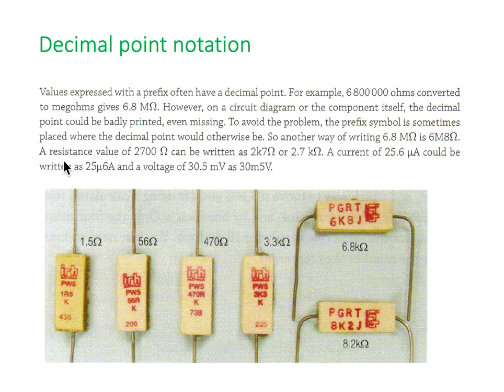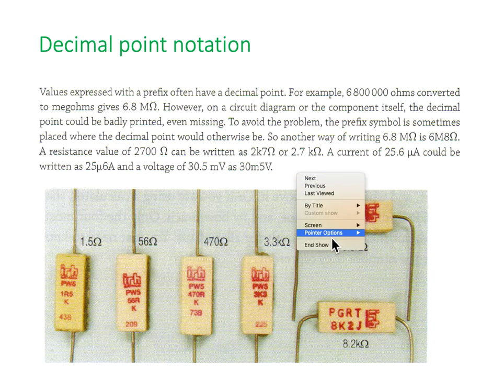So a resistor of a value of 2700 ohms could also be written as 2k7 omega or 2.7 kilo ohms. Similarly, a current of 25.6 micro amps could also be written as 25 micro 6 amps. And similarly, a voltage of 30.5 millivolts could be written as 30m5 volts.